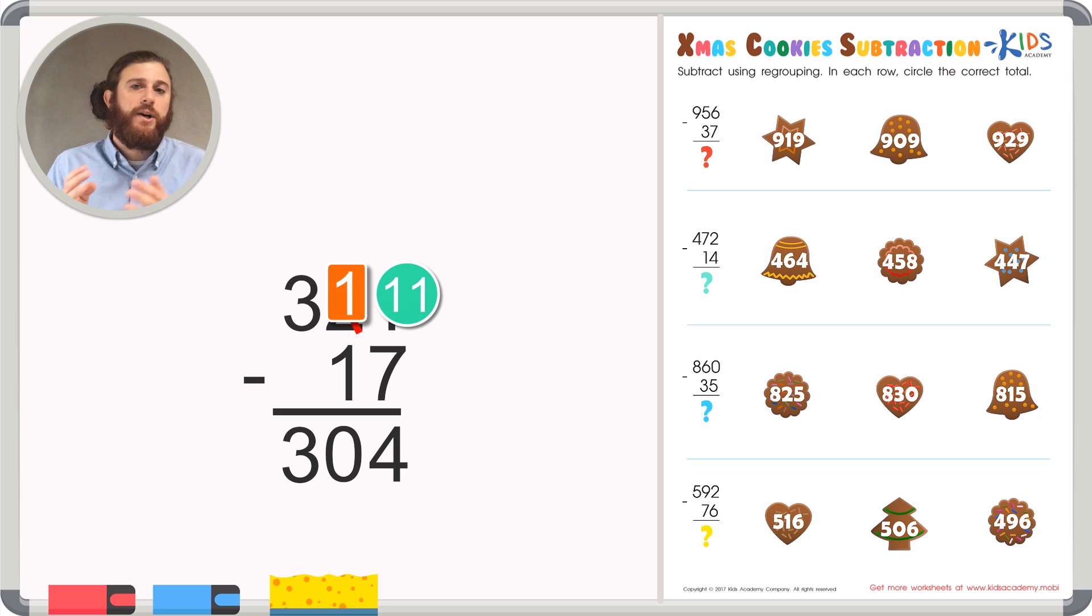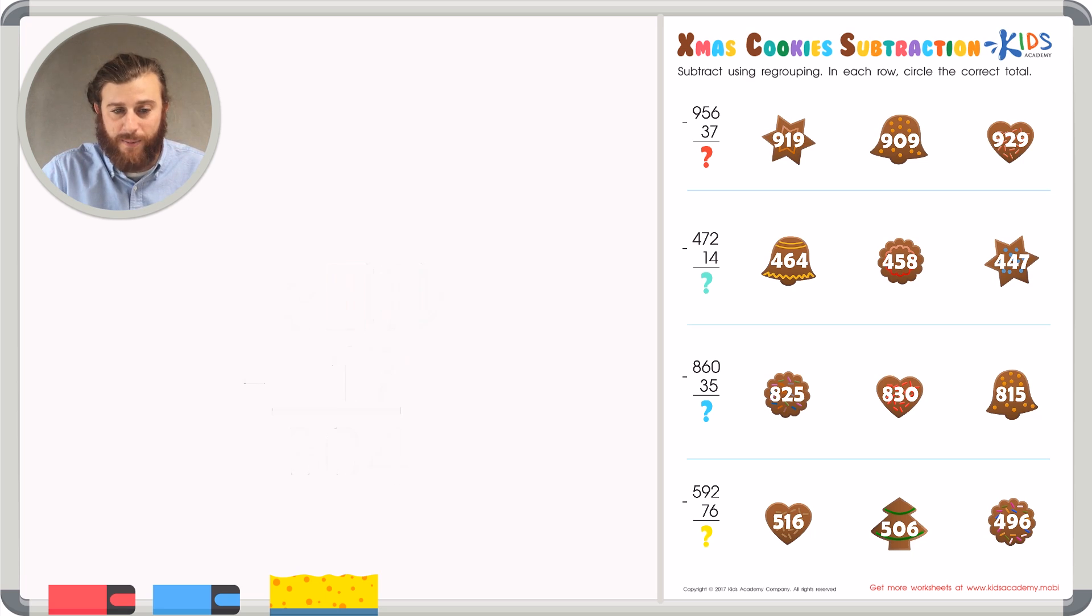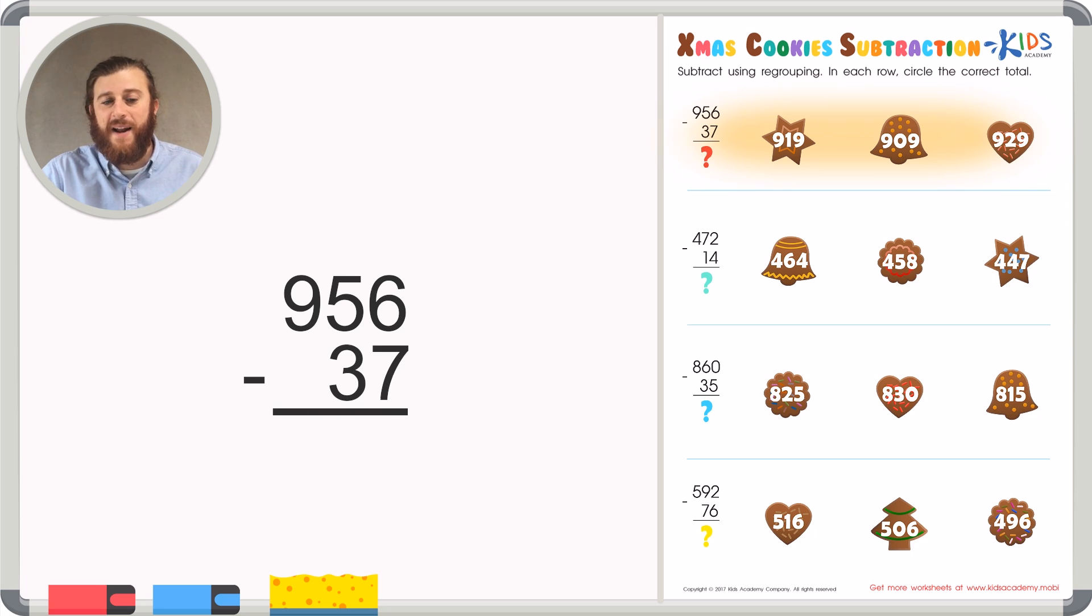Let's use this strategy of regrouping to help us solve the rest of the problems. Our first problem has us subtracting 956 minus 37. We have the same situation as we had in the example. The top number in the ones place is smaller than the bottom number in the ones place. So we're going to look next door to the tens place and borrow a 10 from 5.